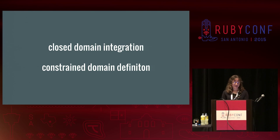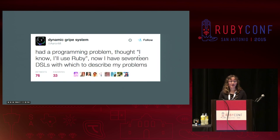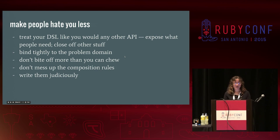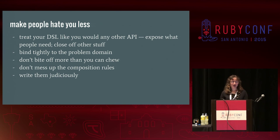So I'll start wrapping up now. As Rubyists, we are not going to stop writing DSLs anytime soon. It's one of the things everyone jokes about us, but actually it's a strength, because DSLs are very powerful. So the question becomes how do we write the good ones? You can treat your DSL like you would any other API: expose what people need, close off the other stuff, stay close to the domain you're describing, have sensible composition rules, and keep everything small enough to be complete.